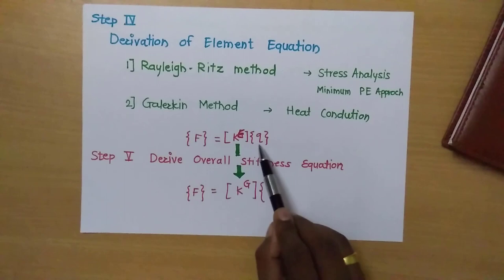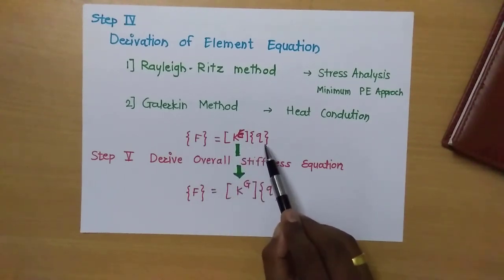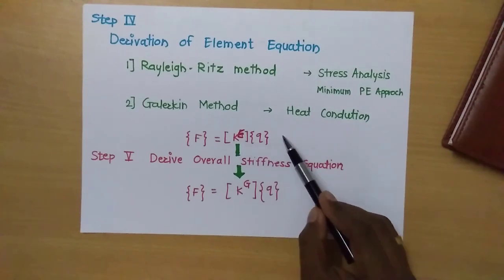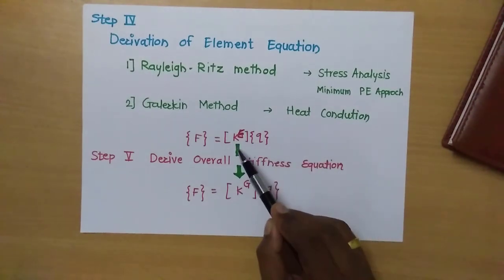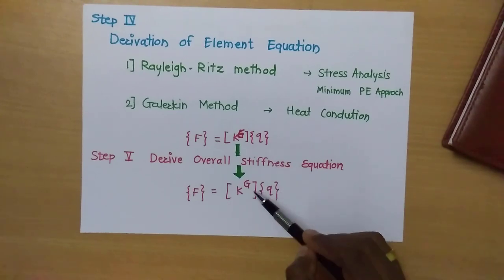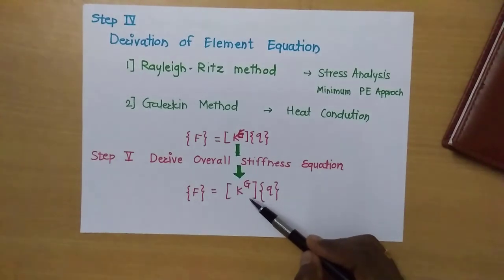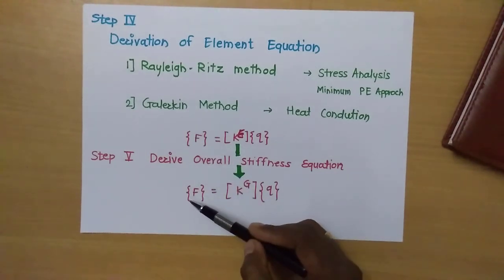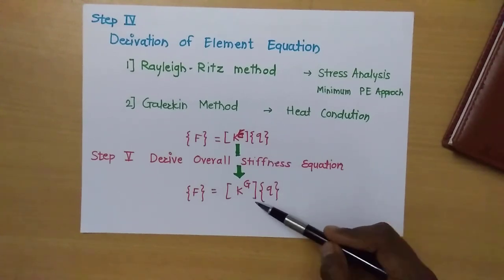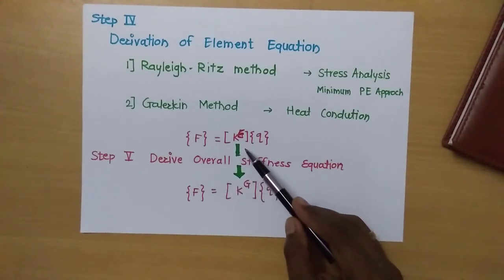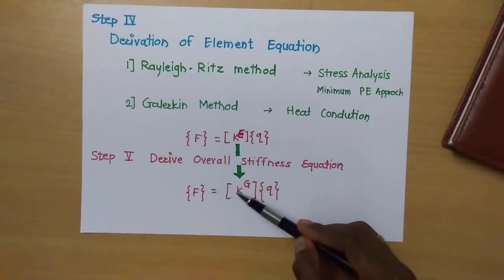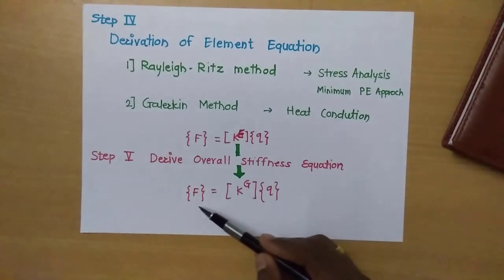The fifth step is to derive the overall stiffness equation. If there are n number of elements, we get n number of equations. These n equations need to be added together to get the global stiffness of the system. Forces are added accordingly to get the global force vector, and displacements are added to get the displacement vector. To form the global stiffness matrix, each element is connected to the next through shared nodes. This global stiffness matrix represents the whole stiffness of your problem.